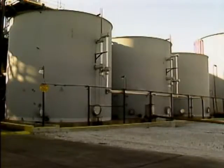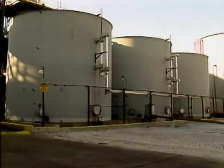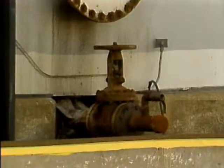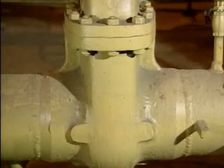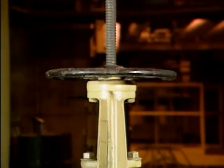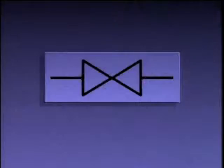Gate valves are also used in situations where the valve position seldom changes, such as a drain valve on a tank — in that situation, the valve would be closed most of the time. Gate valves are pretty easy to identify because they have relatively long bodies and long valve stems. On a piping system diagram, a gate valve is usually represented by a specific symbol.